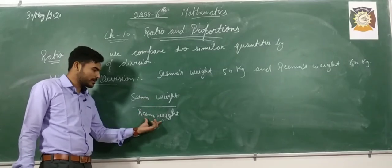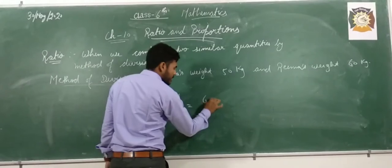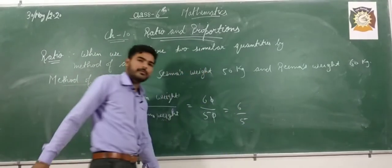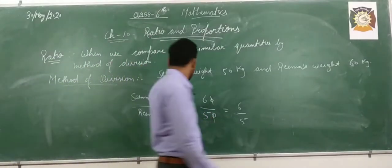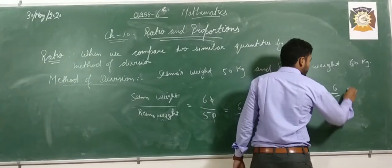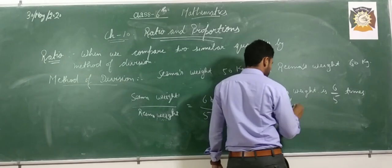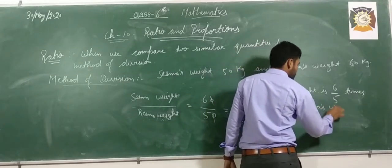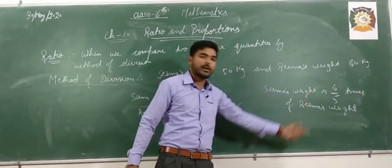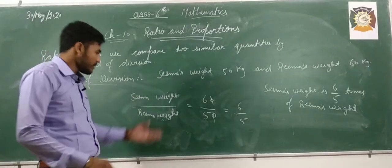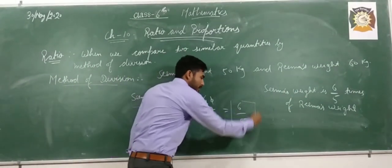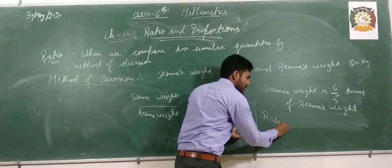Sima's weight as numerator and Reema's weight as denominator, that is equal to 60 by 50. Cancel the zeros — that is equal to 6 by 5. It means we can say that Sima's weight is 6 by 5 times of Reema's weight. This comparison with the help of the method of division is also called ratio.